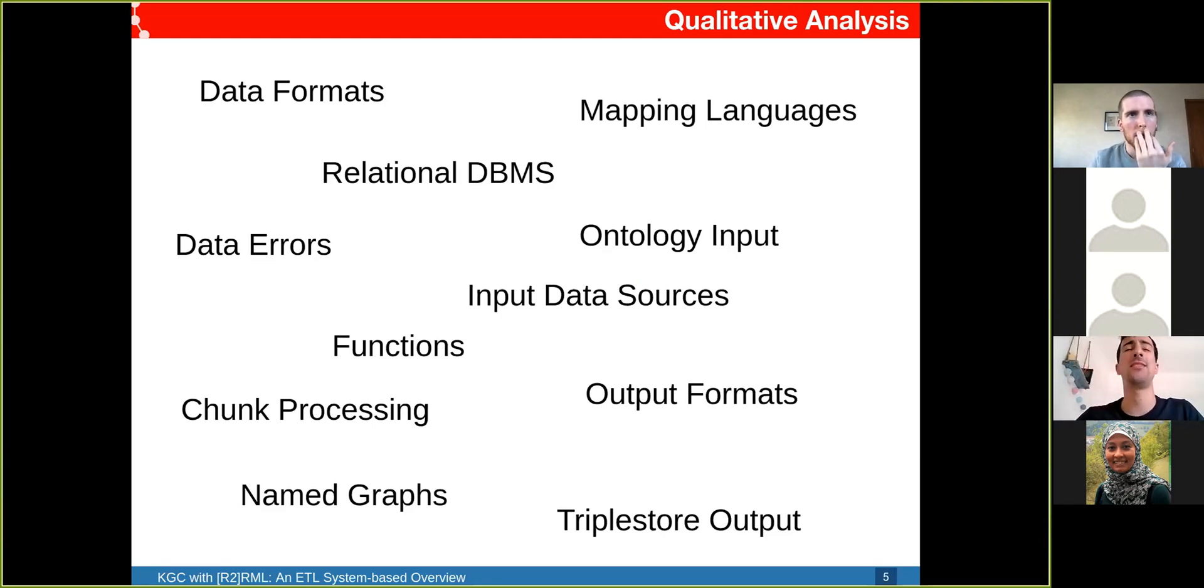Regarding data errors, it is interesting that none of the engines support it, which is curious because it is in the R2RML specification. For instance, they do not support datatype literals. Chimera and OnTop are the ones that support ontology as an input to do some inference. All RML engines support functions except for RML Streamer, and R2RML-F also supports functions.